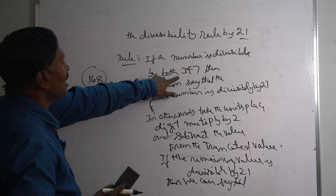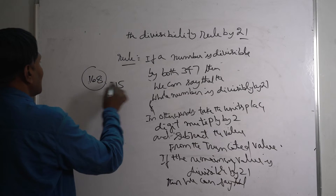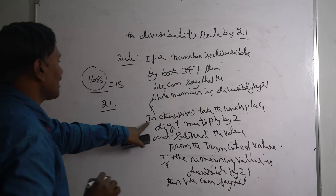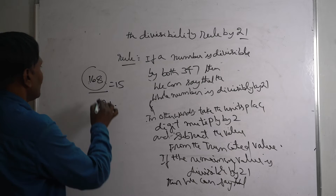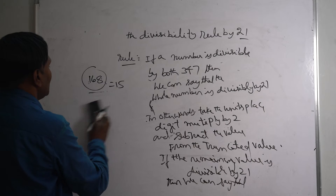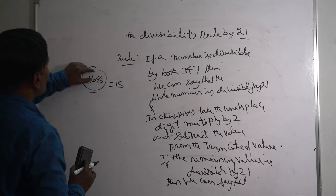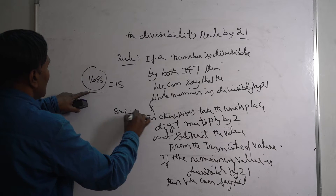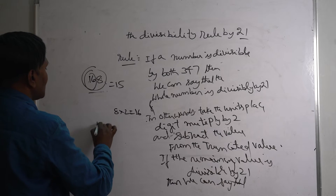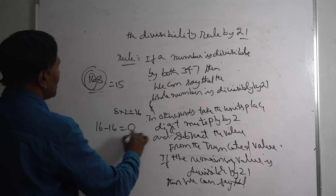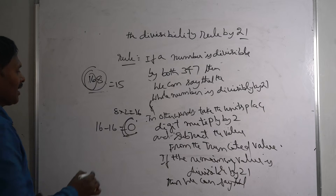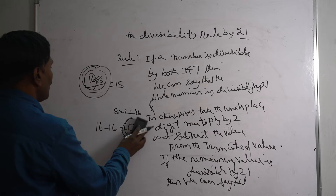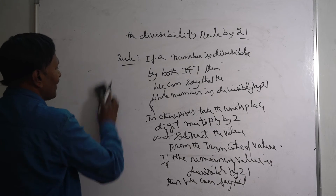Since 168 is divisible by both 3 and 7, we can say that this number is divisible by 21. Using the other method: take the units place digit 8, multiply by 2 to get 16. The truncated value is 16. So 16 minus 16 equals 0, and 0 is always divisible by 21. So 168 is divisible by 21.